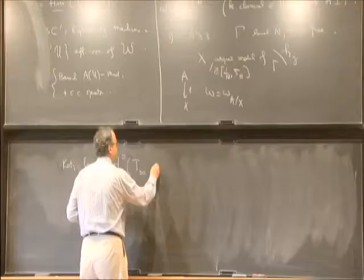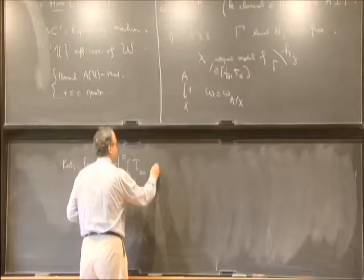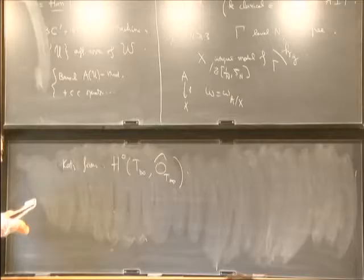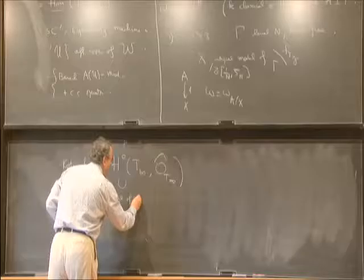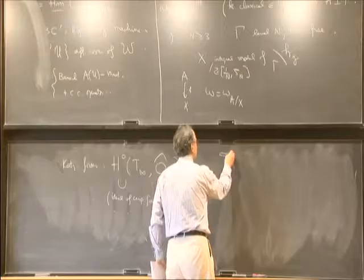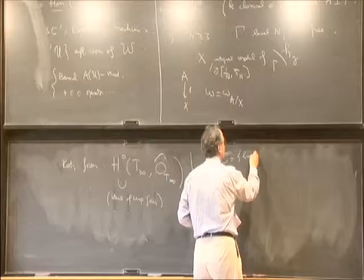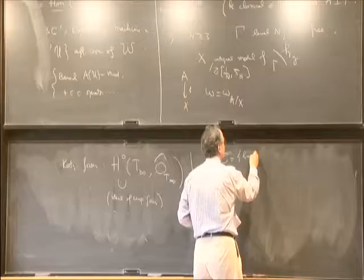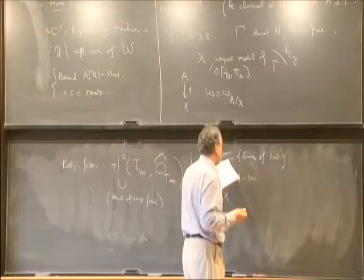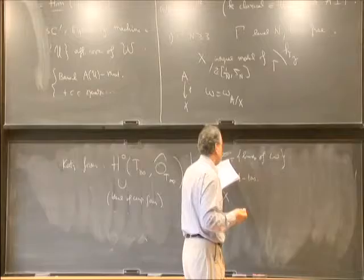Once you have the Igusa tower, you can define Katz's p-adic modular forms by the sections of the completion: Katz forms are H^0(T_∞) of the p-adic completion of functions. Inside you have the ideal of cusp forms. Classical modular forms come from another torsor — an M-torsor, a Zariski torsor — namely the torsor of bases of omega.